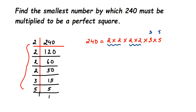If you see single unpaired factors, that means the number is not a perfect square. The question asks for the smallest number by which 240 must be multiplied. If we multiply by an additional 3 and an additional 5 — which is 3 × 5 = 15 — then all numbers will pair up and the number will become a perfect square.